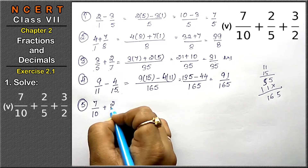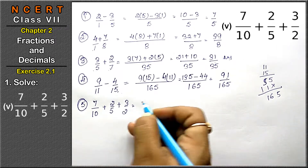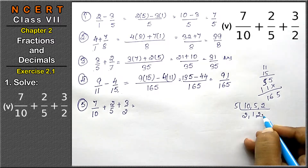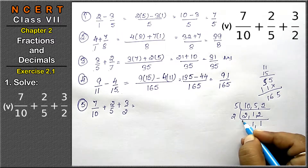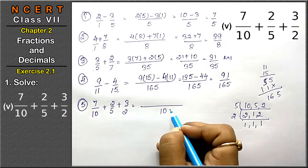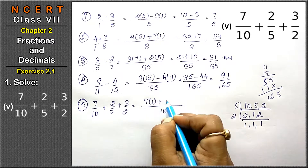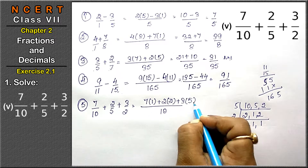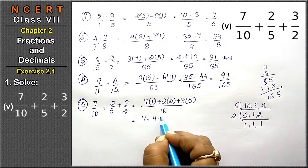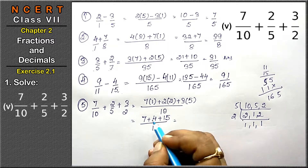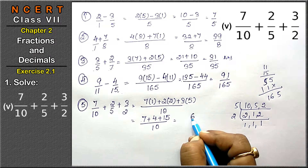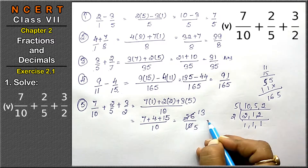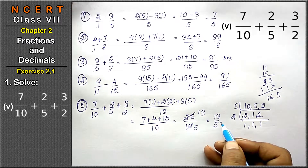The fifth part is 7 upon 10 plus 2 upon 5 plus 3 upon 2. Let's take the LCM of 10, 5, and 2, which is 10. Multiply accordingly: 7 into 1 plus 2 into 2 plus 3 into 5, that is 7 plus 4 plus 15 upon 10, equals 26 upon 10. Simplifying gives 13 upon 5 is the answer.